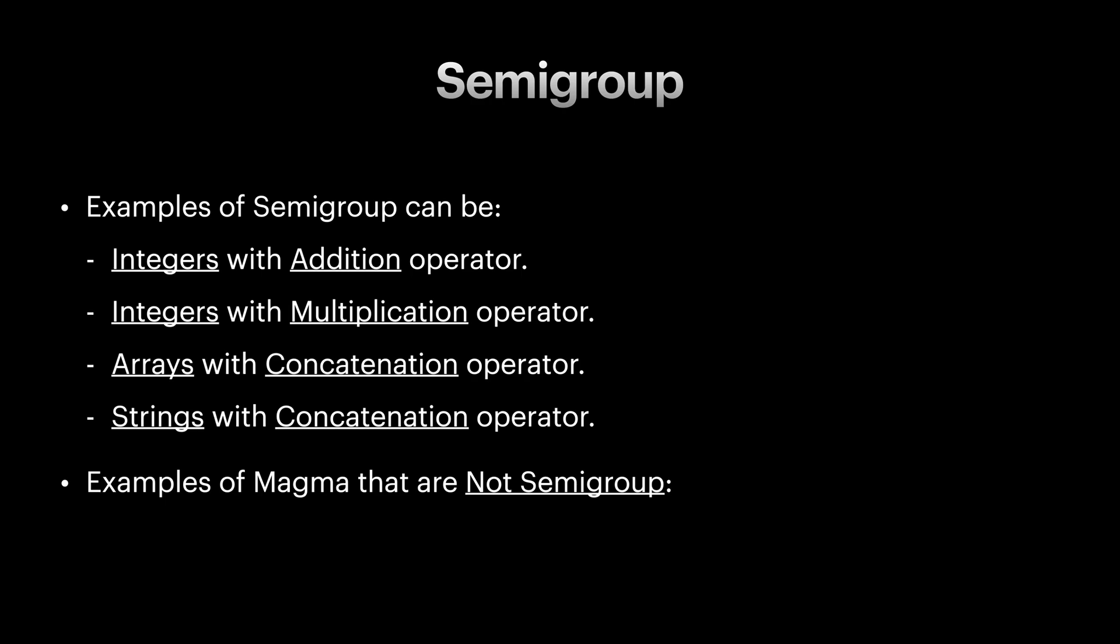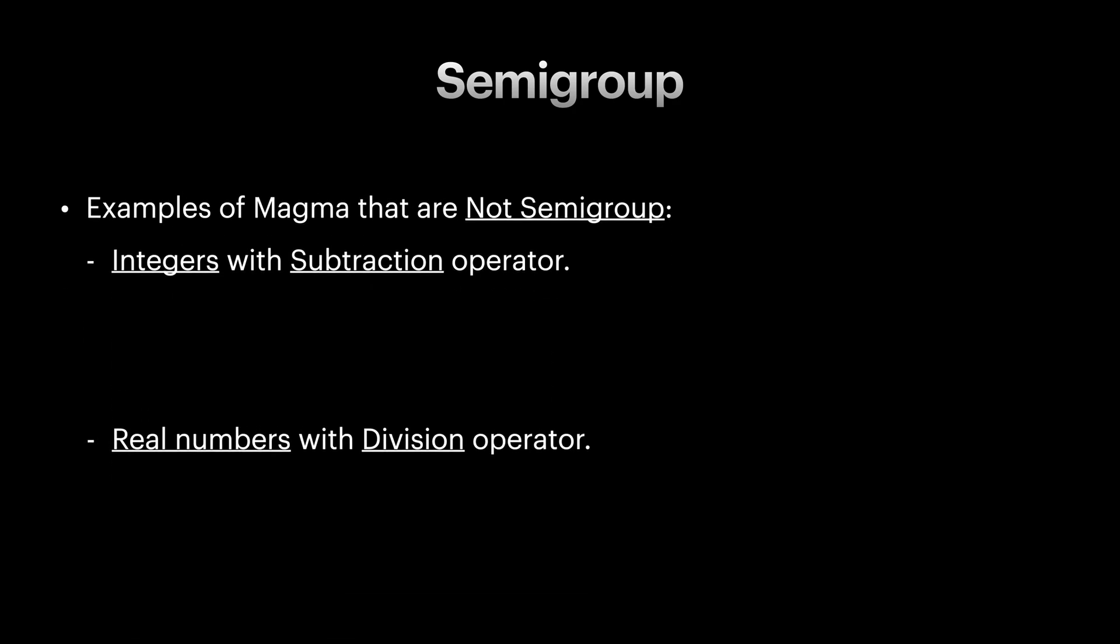For some examples that are magma that are not semigroup, we can have integers with subtraction and real numbers with division operator. To see why these two are not semigroups, let's check the associativity rule for them.